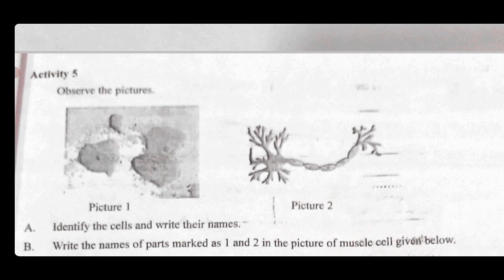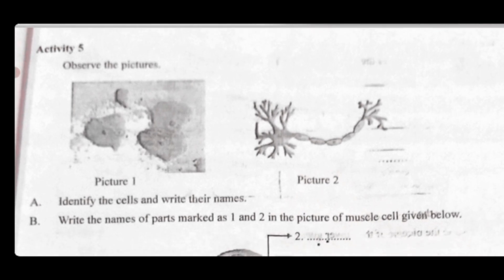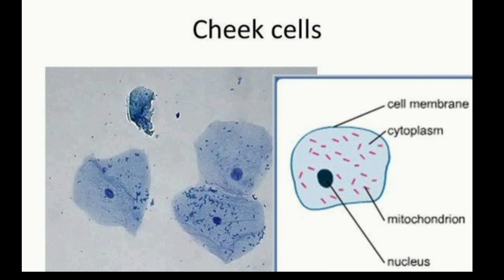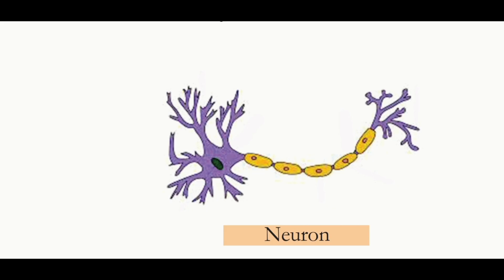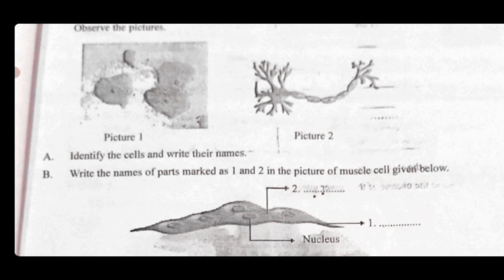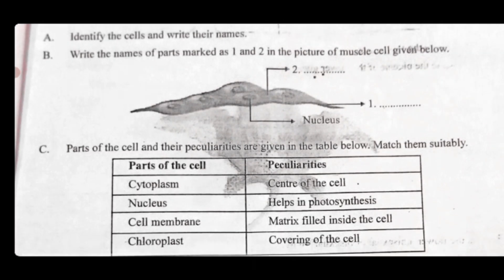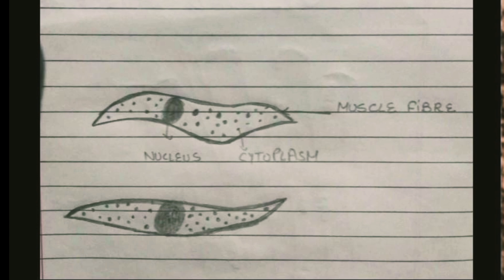Activity Five: observe the picture. Picture one and picture two — identify the cells and write their names. That is the first question. Second question: write the names of parts marked as one and two in the picture of muscle cells. The parts are the nucleus and cytoplasm — cytoplasm and muscle fiber.